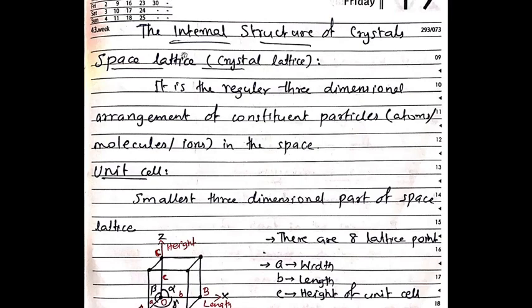Here we are going to discuss the laws of crystallography. The laws of crystallography are the Weiss indices and the Miller indices — that is how we determine some examples and questions.